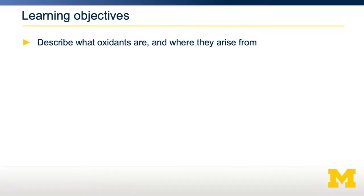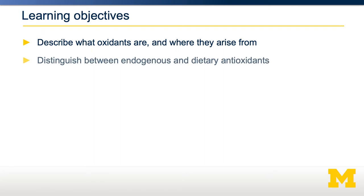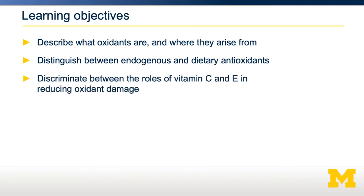In this video we're going to introduce antioxidants and talk about the role of both oxidants and antioxidants and how they're kept in balance. We're going to describe what oxidants are and what processes they arise from, then distinguish between two systems that control oxidant stress: an endogenous antioxidant system and dietary antioxidants. We'll also discriminate between the roles of vitamin C and vitamin E in reducing the potential damage from buildup of oxidants.